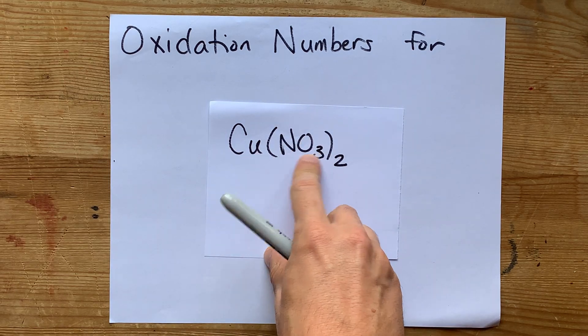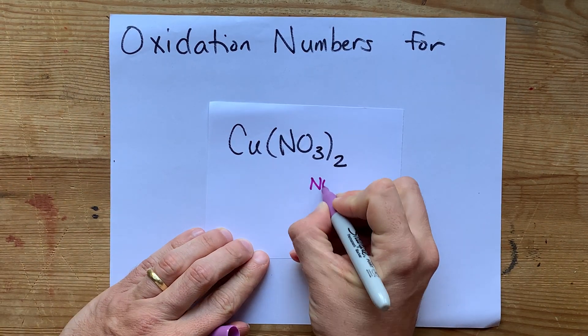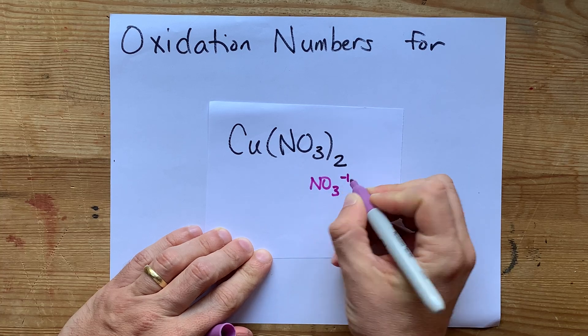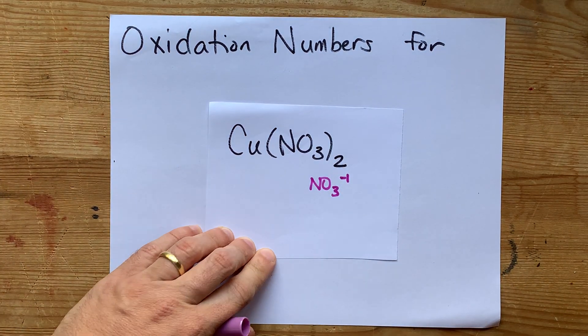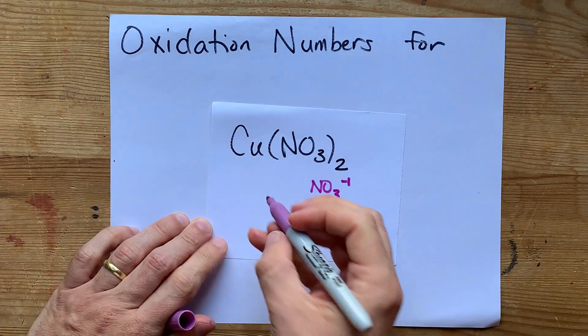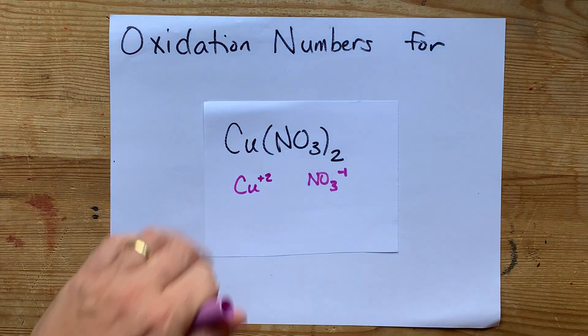You'll have to know that nitrate likes having a charge of minus 1. Nitrates always have a charge of minus 1. That's what makes it the nitrate ion. And this little 2 in the formula came from the fact that it was paired with a copper 2 plus ion.